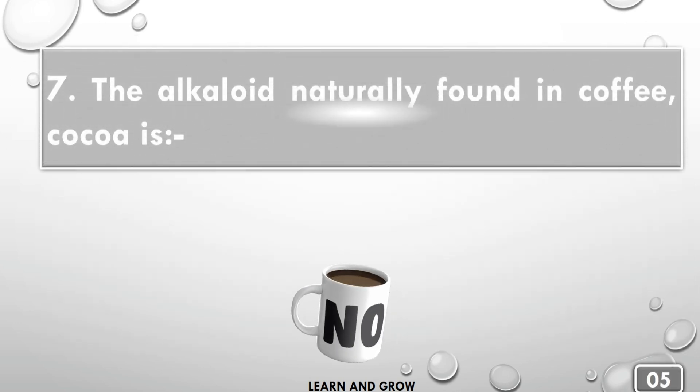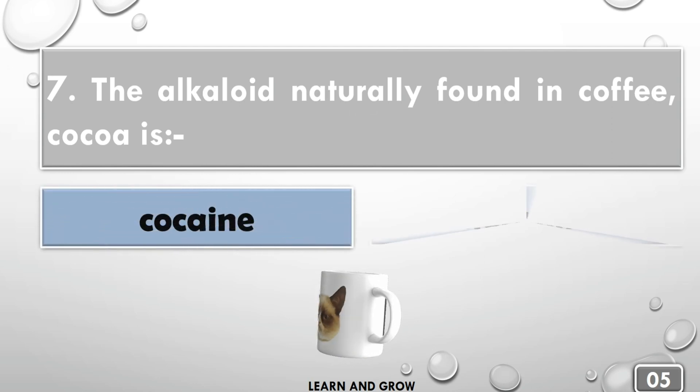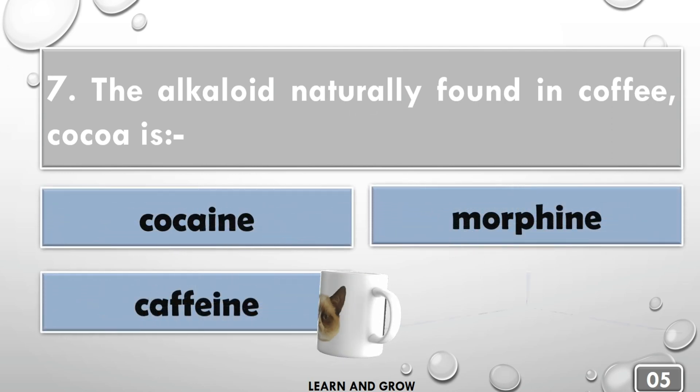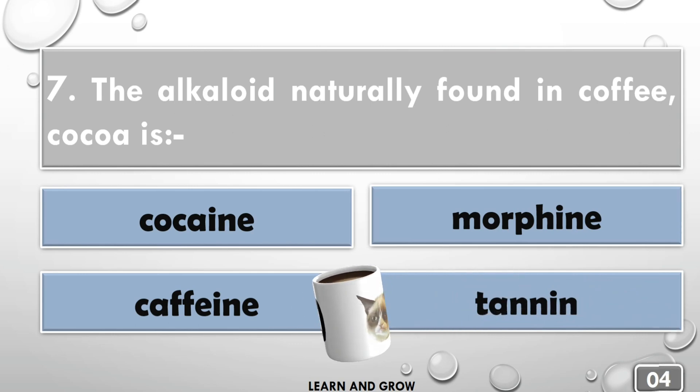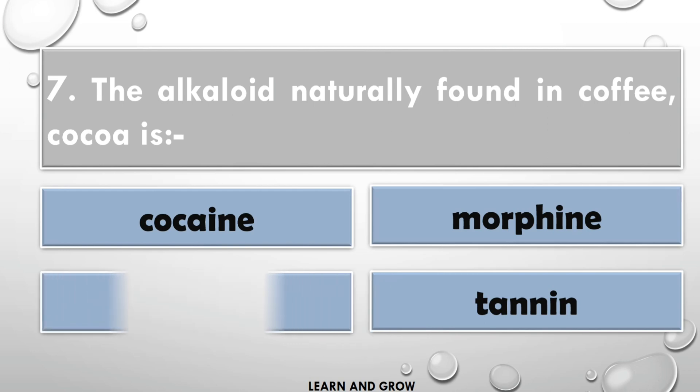The alkaloid naturally found in coffee and cocoa is... The right answer is caffeine.